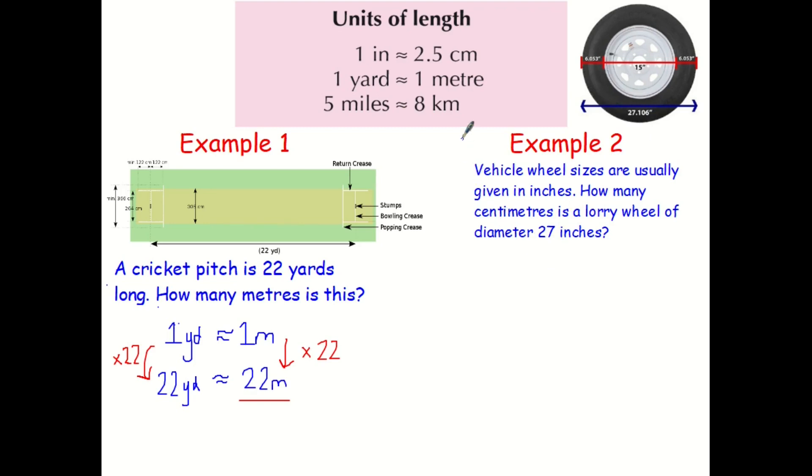So vehicle wheel sizes are usually given in inches. How many centimetres is a lorry wheel of diameter 27 inches. Well, I'm going to put at the top of my question this conversion rate because this is really important that I show the examiner that I know that. So one inch is roughly equal to two and a half centimetres. So I want to know what 27 inches is in terms of centimetres, or approximately equal to anyway.